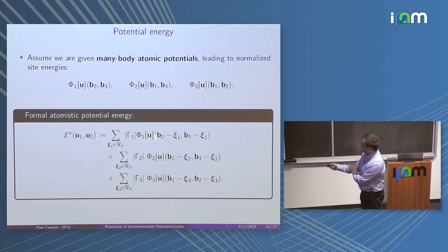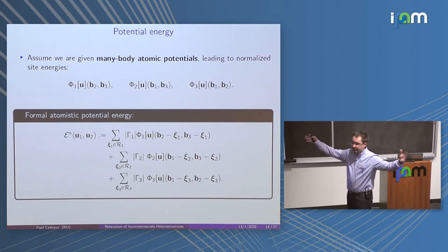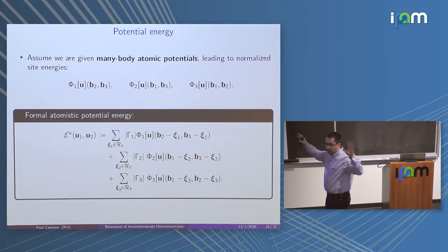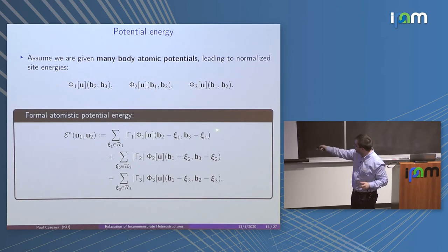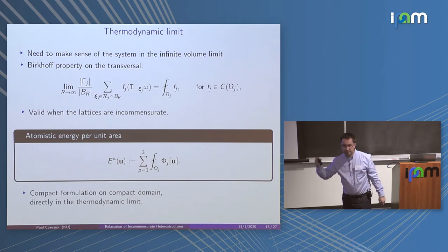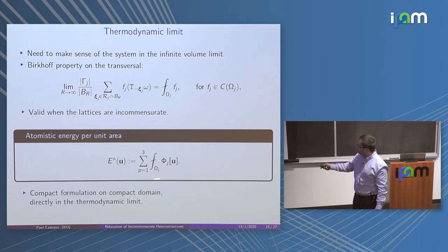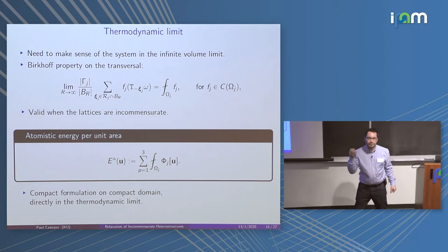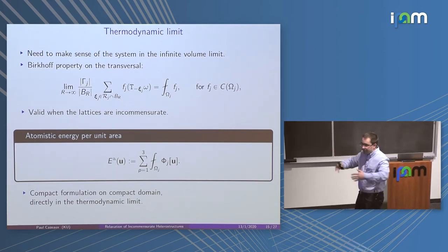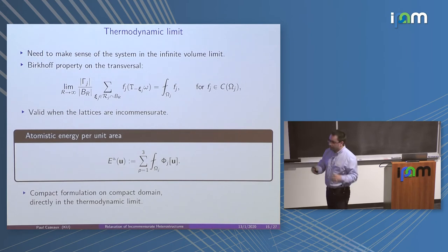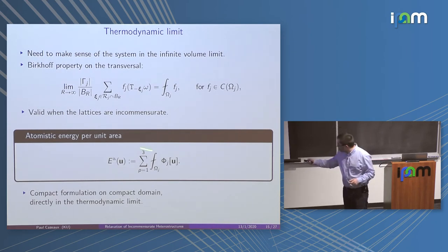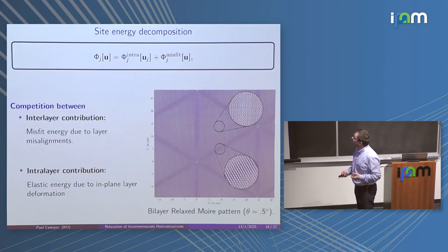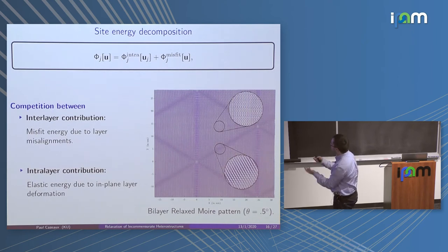Coming back to the many-body potentials, I rewrite what I had before as a kind of infinite sum: for each atom I look at the local configuration and compute the potential knowing where all the atoms have moved depending on the maps u₁, u₂, and u₃. I get this infinite sum again, but because of the Birkhoff property — ergodicity — I can replace this infinite sum by just integrals over the configuration space. This is essentially a compact formulation: something I can deal with, no infinite sum, just integrals over compact sets.